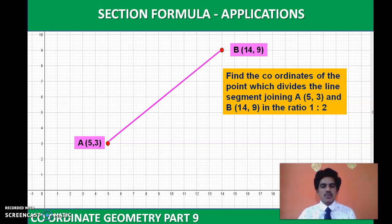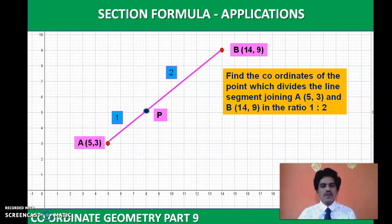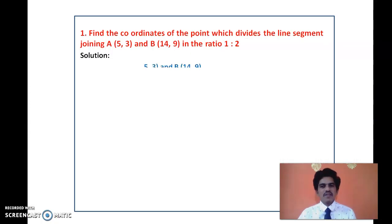We have point A(5, 3) and B(14, 9), with line segment AB and a point P on it. P divides the segment in the ratio 1:2, meaning from A to P is one part and from P to B is two parts — so PB is double AP. Now let us apply the formula to find the coordinates of P.